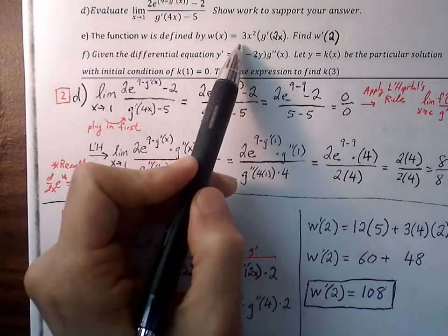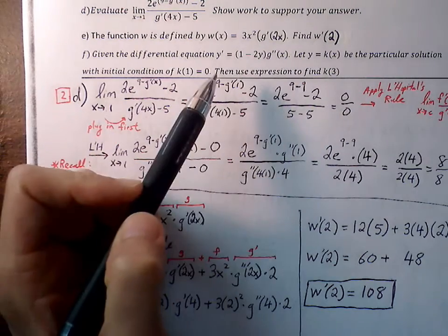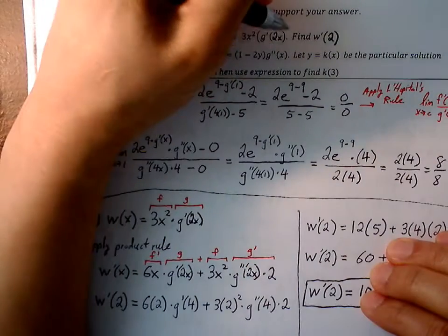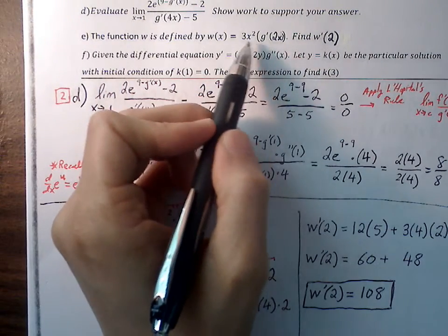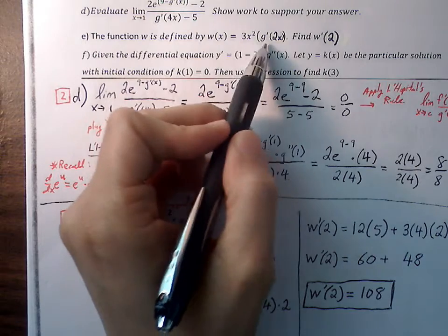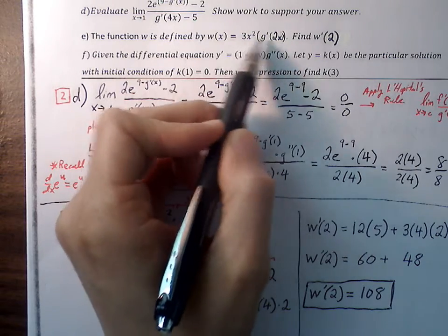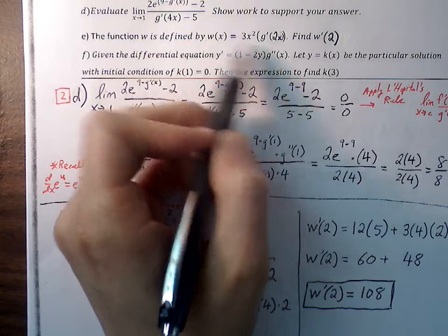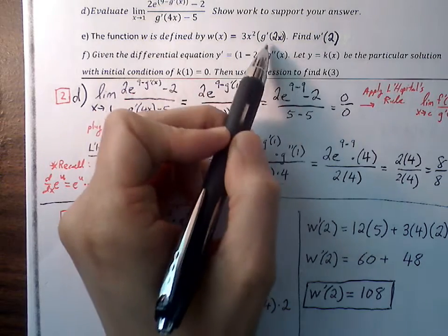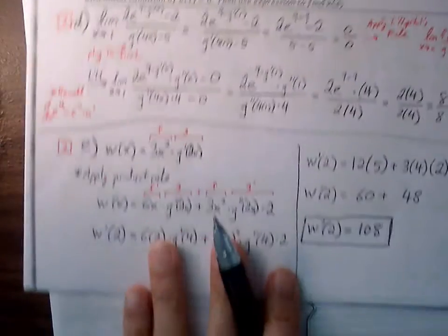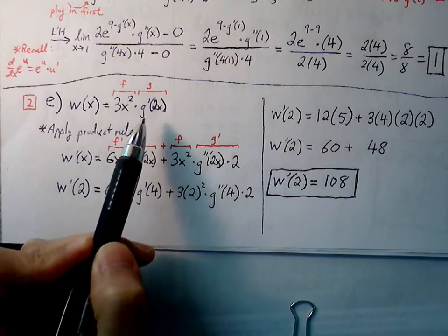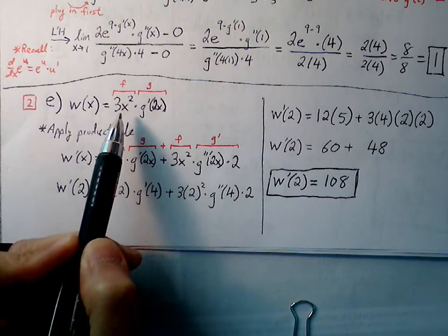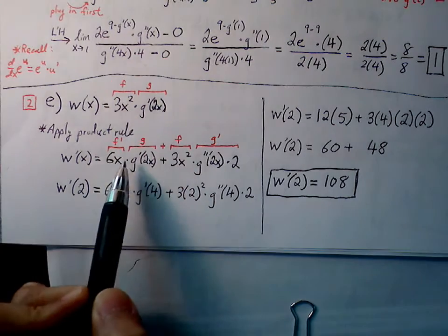For Part E, we have our function w of x defined as three x squared times G prime of two x. We have to apply the product rule and also chain rule. After finding the derivative, we evaluate it at two.